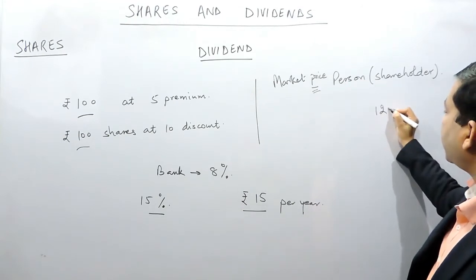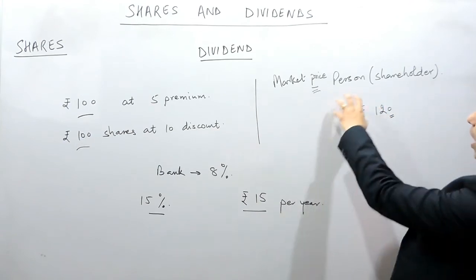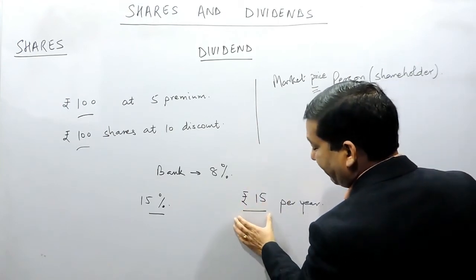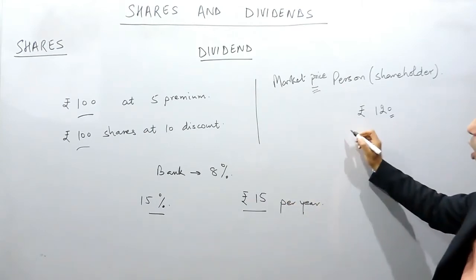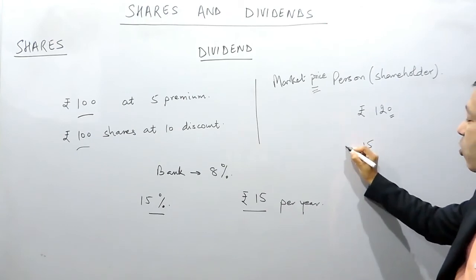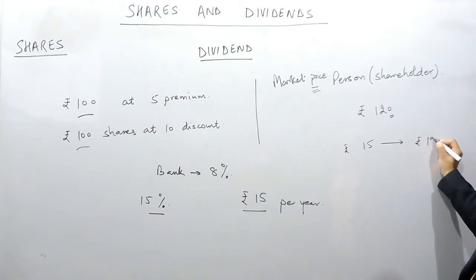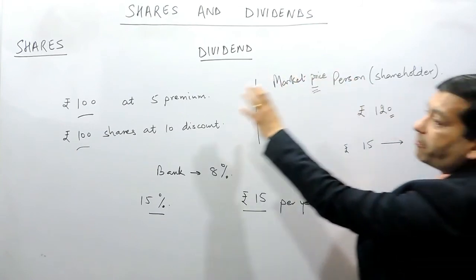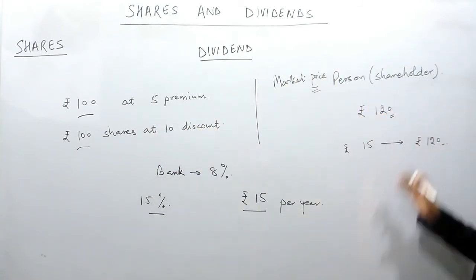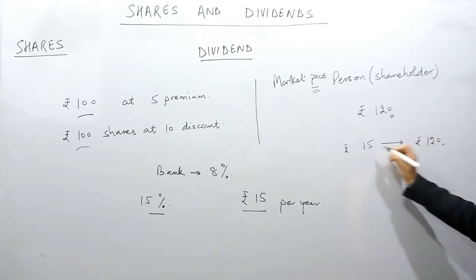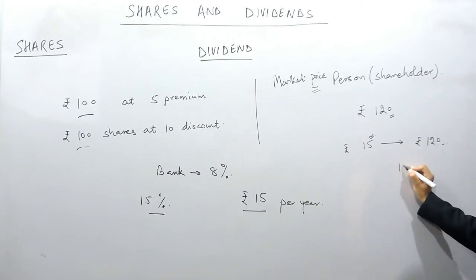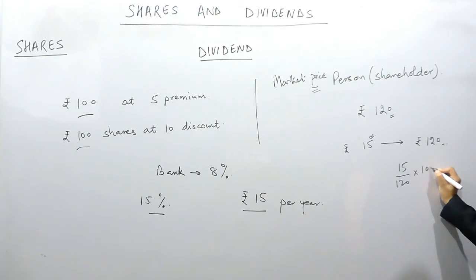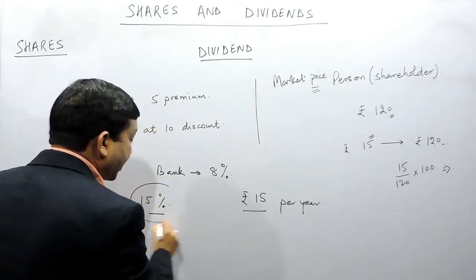Suppose the market price of the share is Rs.120. The shareholder will not calculate the dividend of Rs.15 on Rs.100, but on Rs.120. For the shareholder, he is getting Rs.15 profit on a value of Rs.120. Today's market value is Rs.120, so he is getting Rs.15 as dividend on Rs.120. If we calculate the percentage, it is 15 upon 120 multiplied by 100. So the percentage he is getting is different from the percentage which the company is paying.